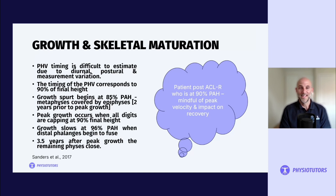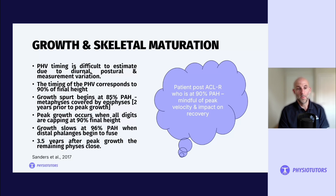Peak height velocity timing is difficult to estimate due to diurnal, postural, and measurement variation. It tends to correspond to approximately 90% of final height, while the growth spurt begins at around 85% of peak adult height and slows at about 96%. About 3.5 years after peak growth, the remaining physes will close.